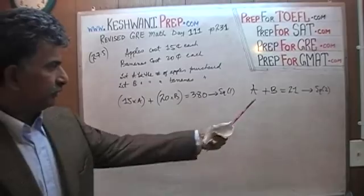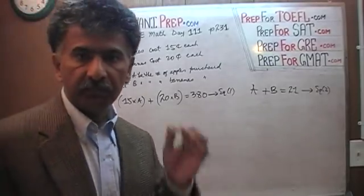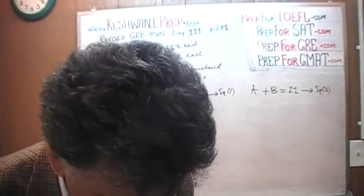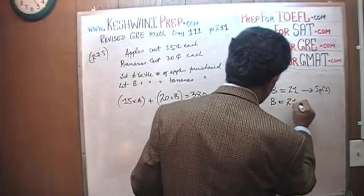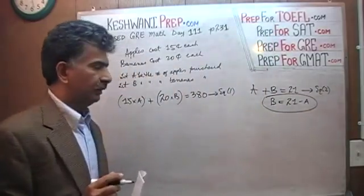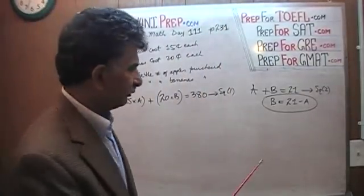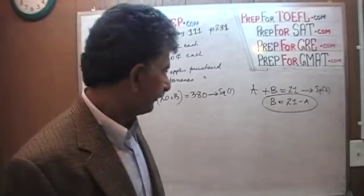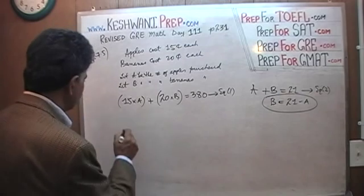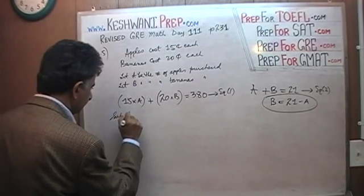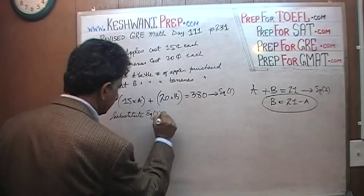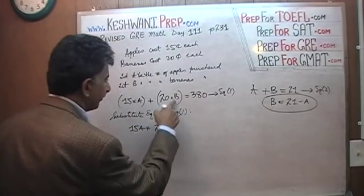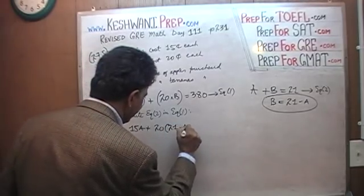The rest is downhill. We substitute one equation into the other. From equation 2, bananas equal 21 minus A — if 21 is the total number of fruit, the number of bananas must be 21 minus the number of apples. Substituting into equation 1: 15A + 20 times (21 minus A) equals 380.